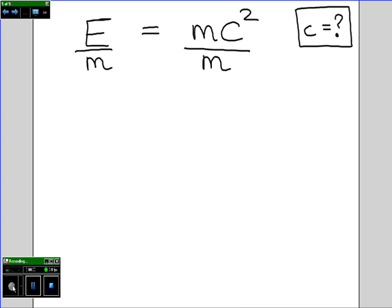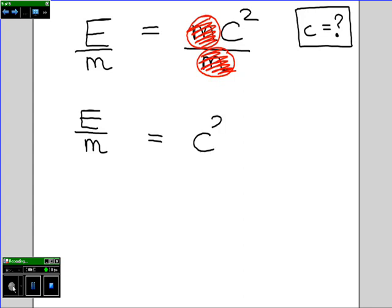You know the routine. On the right-hand side, we've got M divided by M. This will cancel out, leaving us with E divided by M equals C squared.